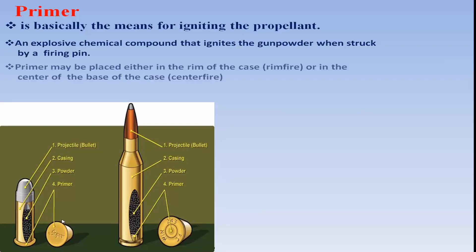Primer may be placed either at the center of the base of the cartridge case, which is known as center fire, or it can be spun into the rim of the base of the cartridge case, which is known as rim fire.